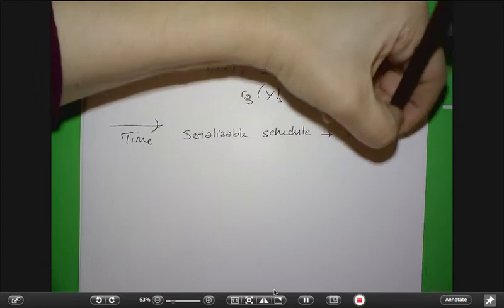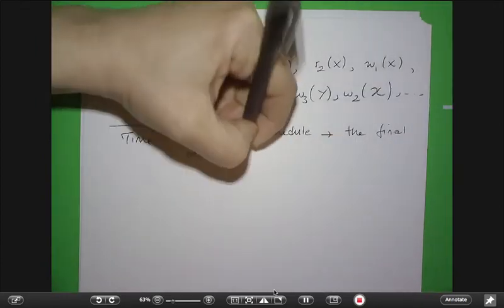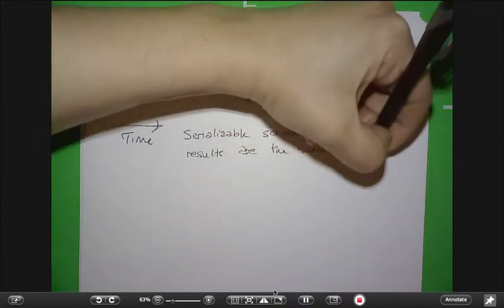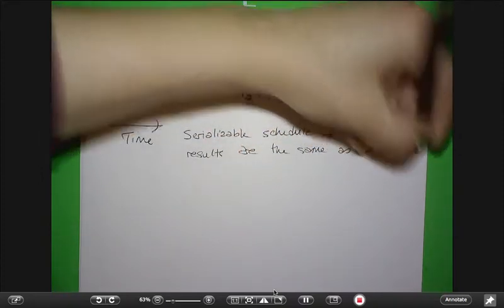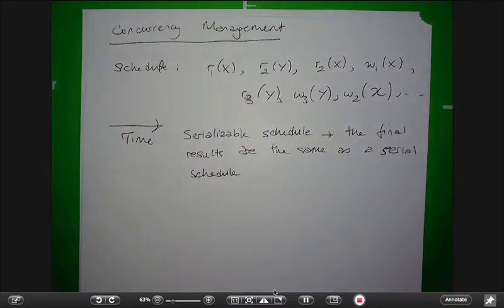A serializable schedule means the final results are the same as a serial schedule. A serializable schedule is our goal status. We want to make sure that some mechanism is in place such that whenever transactions are executed, the schedule that comes out is serializable.